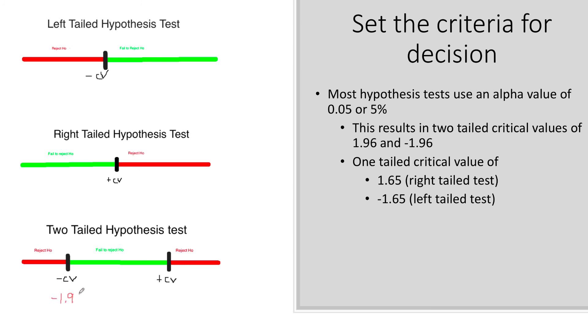And I know for z-tests at a 5% alpha level, or a significance level, the critical values are 1.96 and negative 1.96. Keep in mind, if you change the significance or alpha level, these critical values will change.